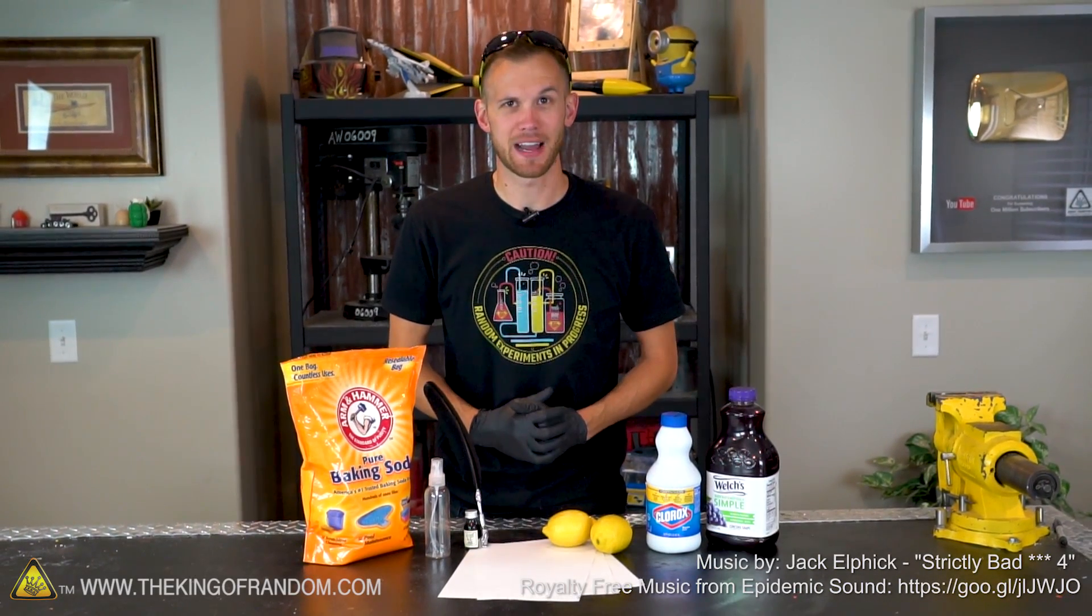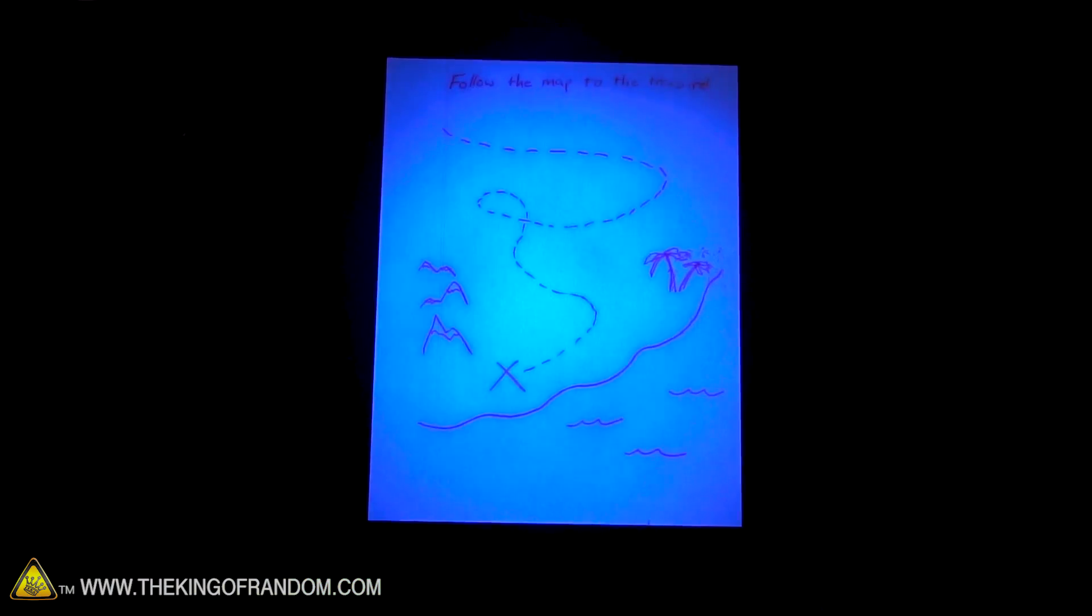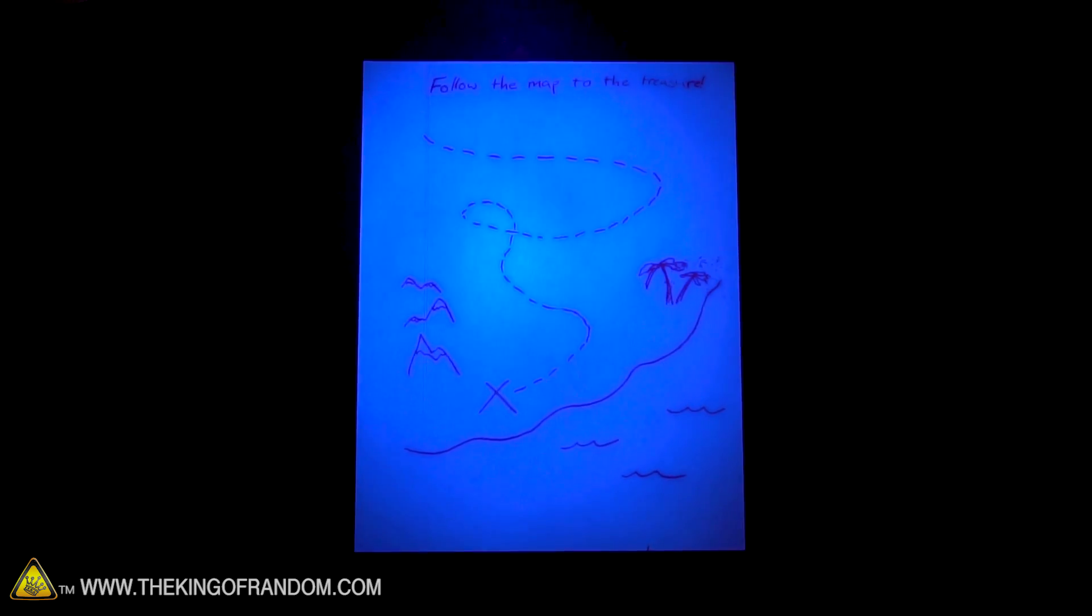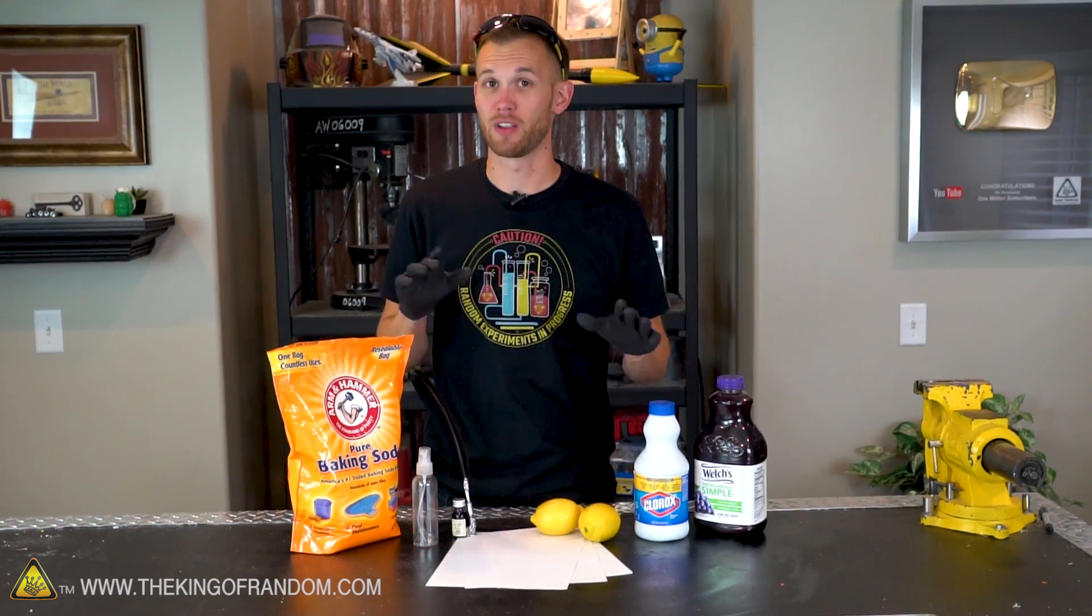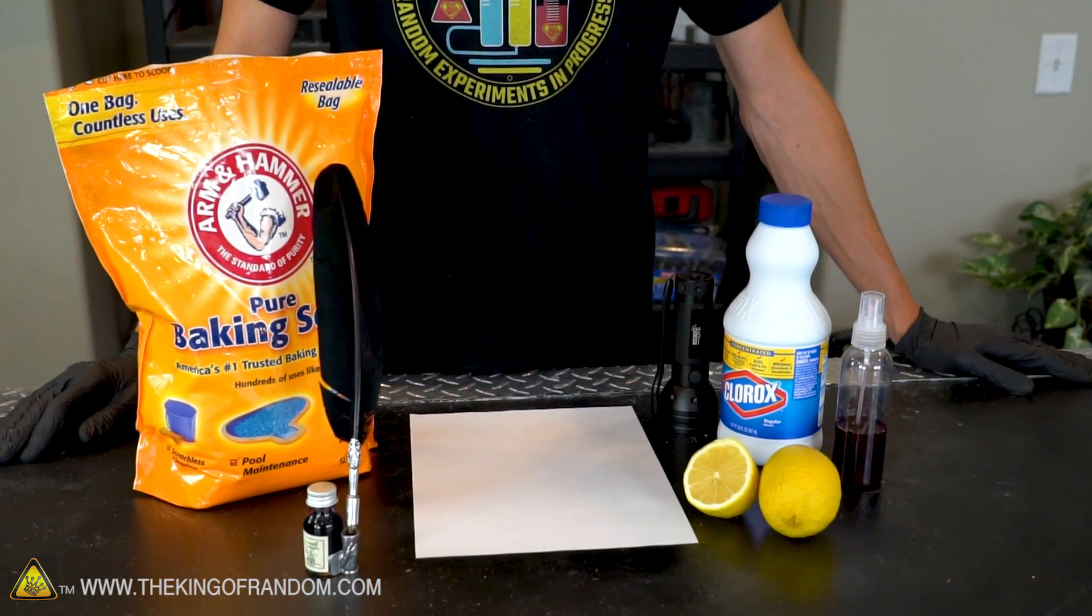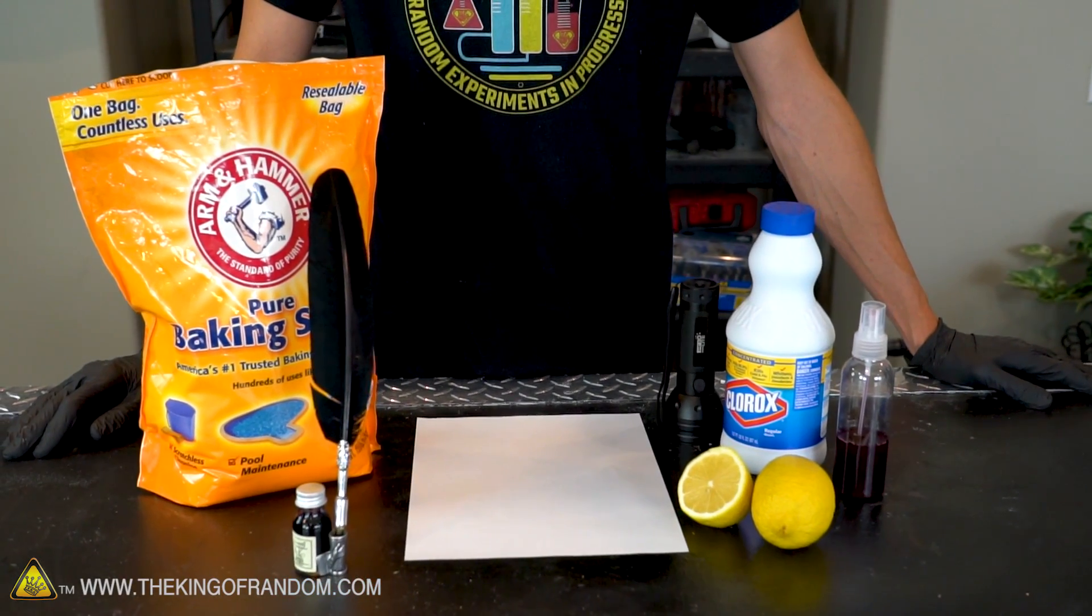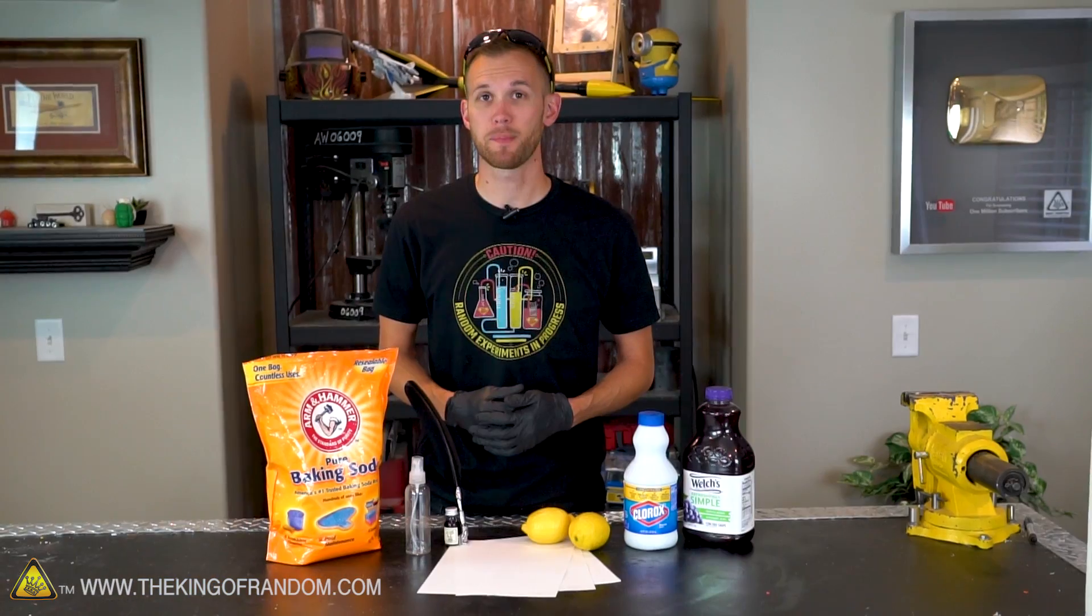When I was a kid I often dreamed of being a spy like James Bond or Jason Bourne, and an old-fashioned staple of the spy is being able to write secret messages from one person to another. There are a lot of different ways you can try and write secret messages, and the purpose of today's video is to try out three different types of invisible ink to see which ones work the best.